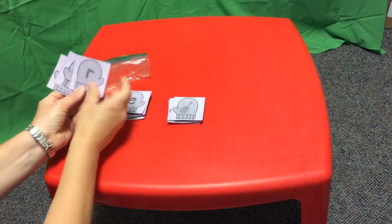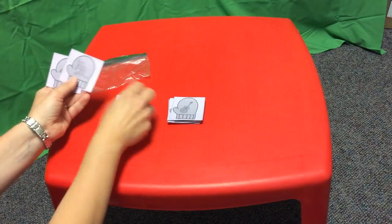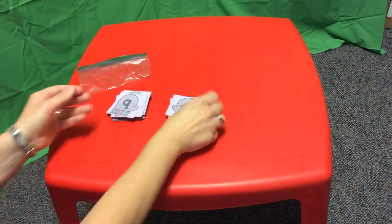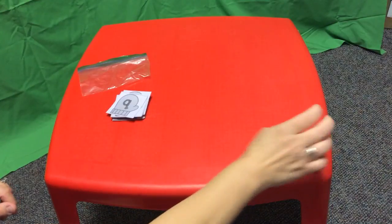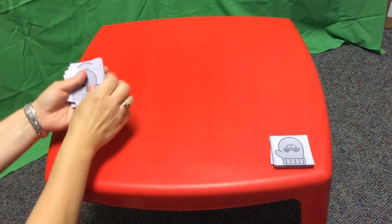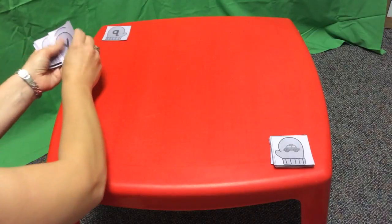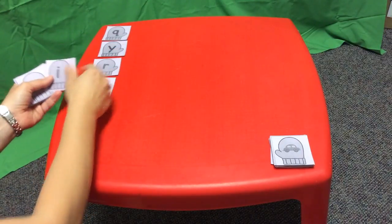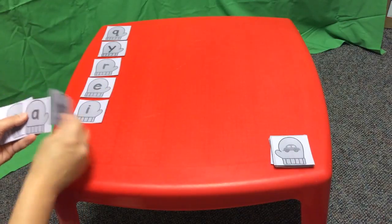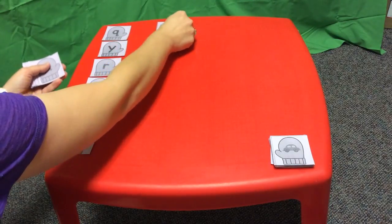When you're all done, your job is to put these on the floor or the table aside, and you're going to lay out all of your lowercase letters. It doesn't matter if they're in order or not, you're just going to lay them all out on the table.